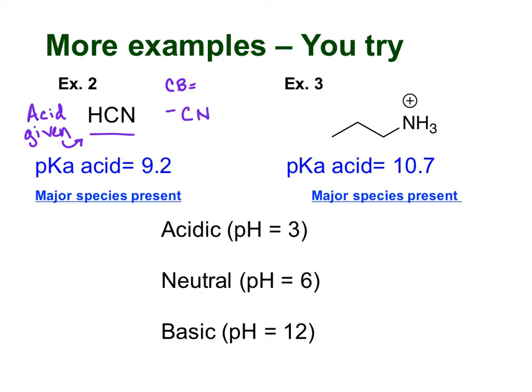Hopefully you got this. It should be taking off the H from HCN with a minus charge. So that's our conjugate base form, and the original form is of course the acid form. So now that we know that, pause the video and try to figure out which species is present in the acidic, neutral, and basic conditions.